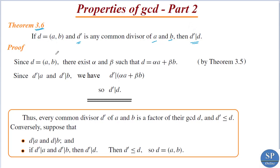This theorem has a simple proof. We are given that d equals the GCD of a and b. Therefore, by the previous theorem — theorem 3.5, proved in the previous lecture — there exist alpha and beta such that d equals alpha·a plus beta·b. The theorem states that the GCD of a and b can be expressed as a linear combination of a and b.